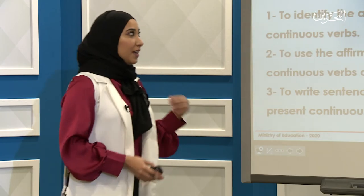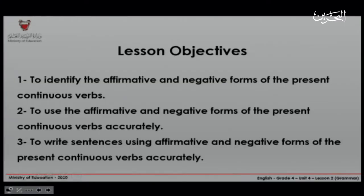Before we start our lesson, you will need your mini board and a marker, or a piece of paper and a pencil. Here are today's lesson objectives. By the end of today's lesson, you are going to be able to identify the affirmative and negative forms of the present continuous verbs, use them accurately, and write sentences using affirmative and negative forms of the present continuous verbs accurately.